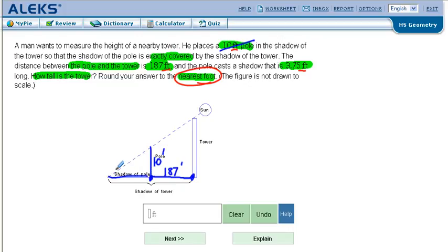And the pole casts a shadow which is 3.75, so that's from only from here to here. The shadow of the pole is 3.75 feet. We're being asked how tall is the tower.